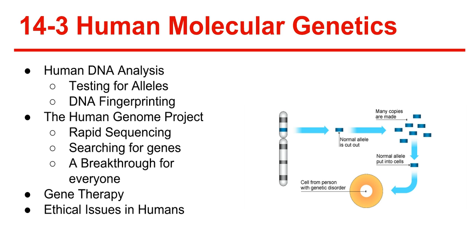14-3: human molecular genetics. Human DNA analysis — testing for alleles. Doctors test for disorders that can potentially be passed down to the next generation, and genetic tests are available for hundreds of different disorders. DNA fingerprinting is a way of genetic identification. It uses sections of DNA that have little or no known function but vary widely from one individual to another. These little-known sequences are used because the sequences that affect humans are very similar across the entire human population.